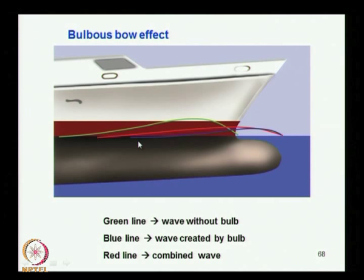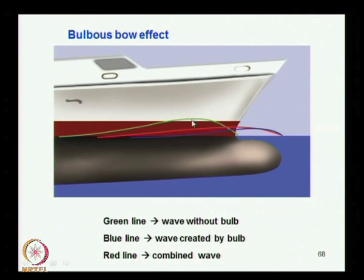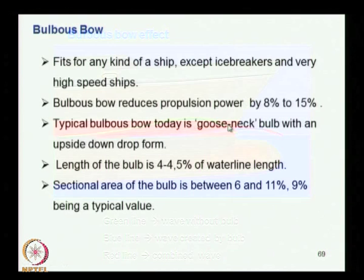So in these two counts, the bulb helps in reducing resistance. This is the picture shown in the previous class — the effect with and without bulb. You can see the green line is without bulb, the blue line is the wave generated by the bulb, and the phase difference results in the resultant wave shown with the red line — the combined wave which effectively brings down the size of the wave.